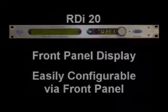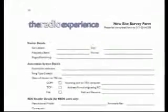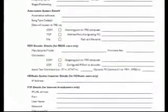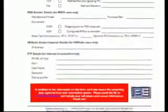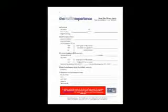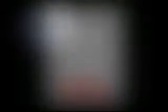Now let's set up TRE. When you purchase the Radio Experience software, you will receive a new site survey. This survey will contain questions about your installation, such as IP addresses, automation system details, and general hardware information. We then use this information to pre-configure the Radio Experience software for you. Then you simply install the software from the TRE install disk, copy the configuration license file to the TRE folder, and run the Radio Experience software.